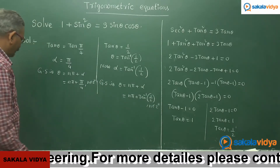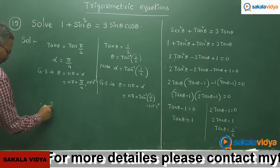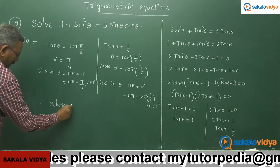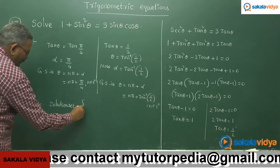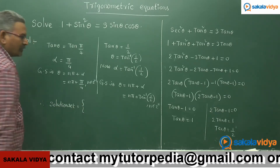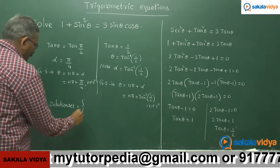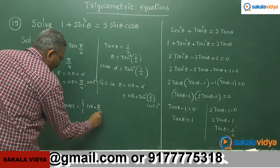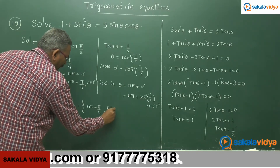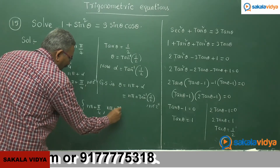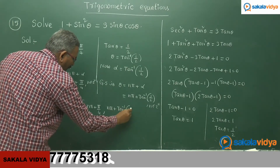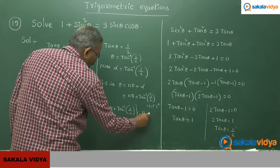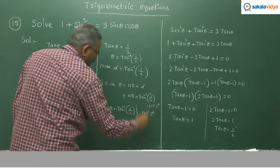Therefore, the solution set equals to {n pi plus pi by 4, n pi plus tan inverse (1 by 2)}, where n belongs to positive integers.